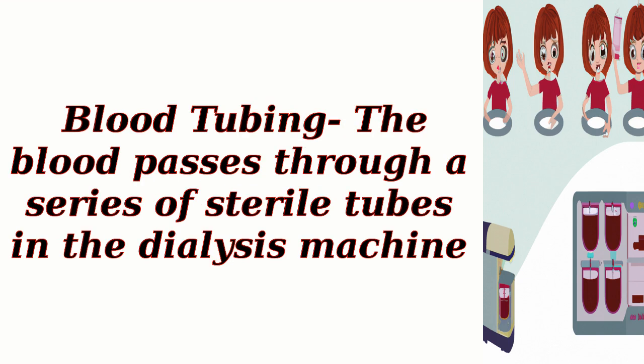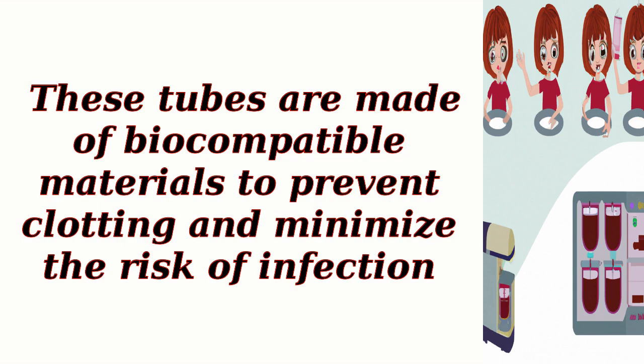Blood tubing: the blood passes through a series of sterile tubes in the dialysis machine. These tubes are made of biocompatible materials to prevent clotting and minimize the risk of infection.